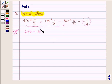Left hand side is sin square π upon 6 plus cos square π upon 3 minus tan square π upon 4